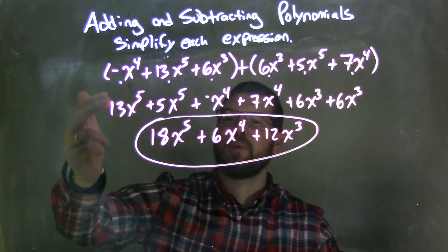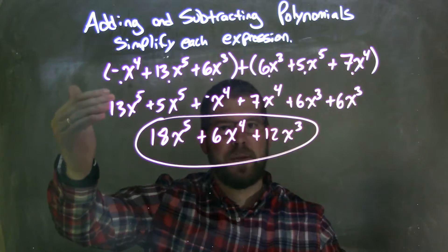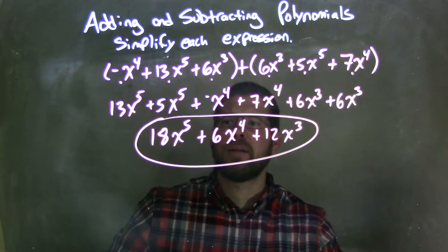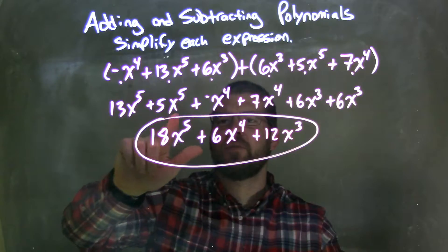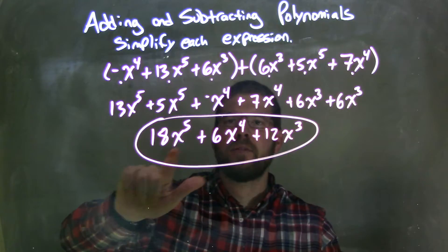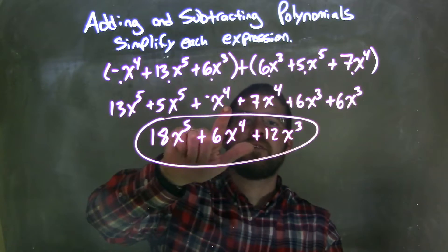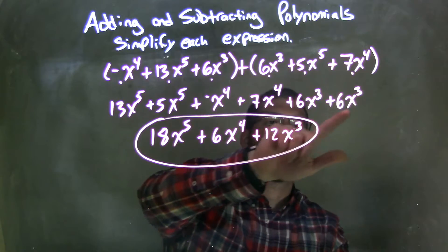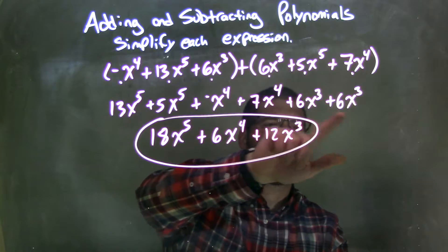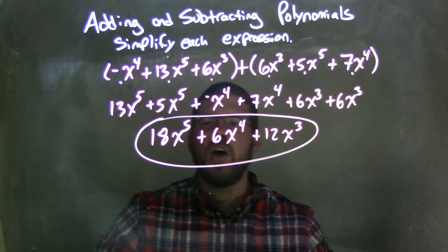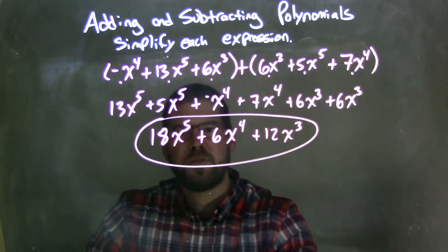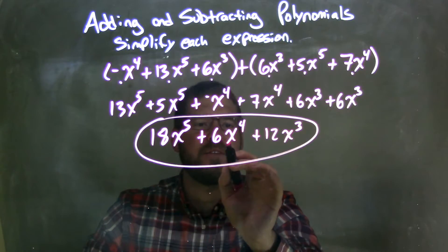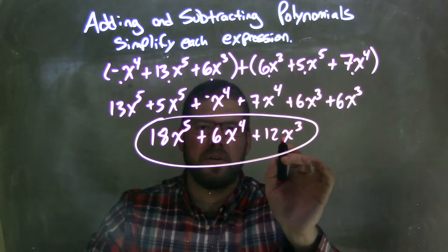I used my dot system and double-checked to make sure I brought everything down and my answer is correct. Then I combined my like terms: 13x to the fifth plus 5x to the fifth is 18x to the fifth, negative x to the fourth plus 7x to the fourth is 6x to the fourth, and 6x to the third plus 6x to the third is 12x to the third — giving me the final simplified answer: 18x to the fifth plus 6x to the fourth plus 12x to the third.